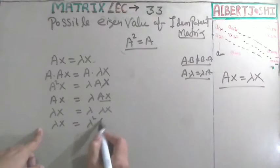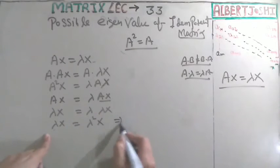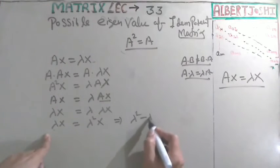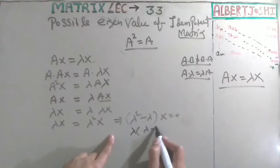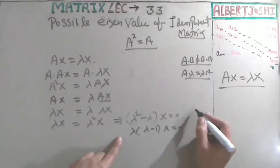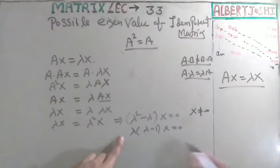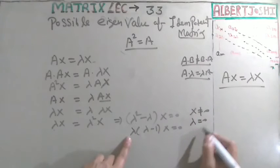So it will come here. Then λ² minus λ times x equals 0. You can say λ times (λ minus 1) times x equals 0. x is never 0 because this is a vector. It means that λ equals 0 or λ equals 1.